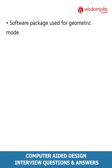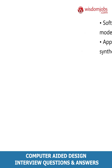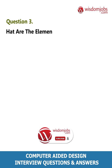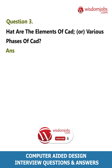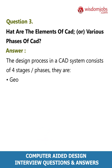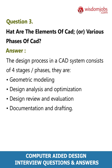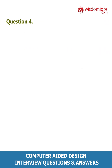Application software for design analysis and synthesis. Question 3: What are the elements of CAD or various phases of CAD? Answer: The design process in a CAD system consists of four stages or phases: geometric modeling, design analysis and optimization, design review and evaluation, and documentation and drafting.